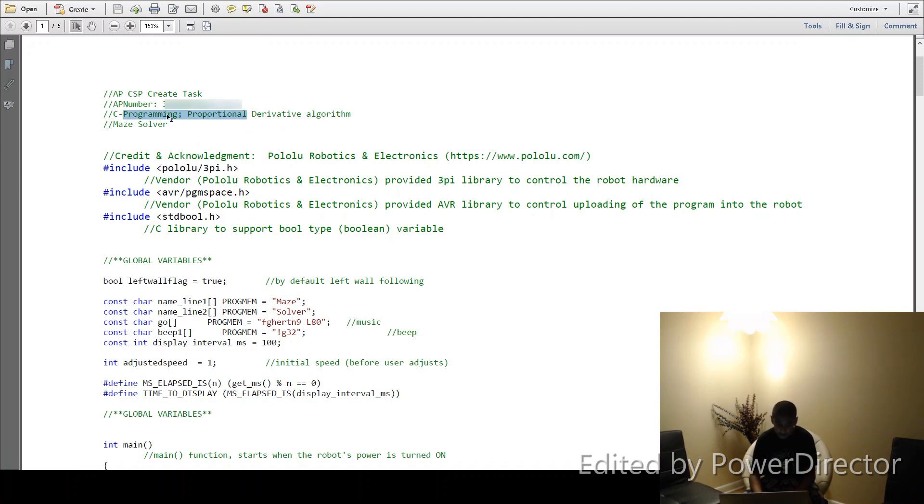The first thing you'll notice on the top is that I mark off what programming language I used, C programming, and you'll remember that I also mentioned this during the video, and that's because it's very important. The graders for the create task need to know what programming language you're using, so it's important that I put the C programming language in both the video and in the actual program. I also wrote what algorithm it used and what its purpose was, but these aren't as important.